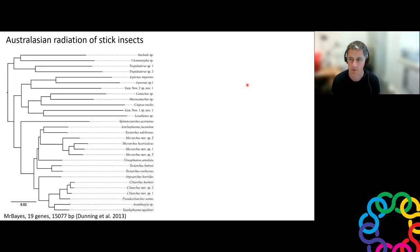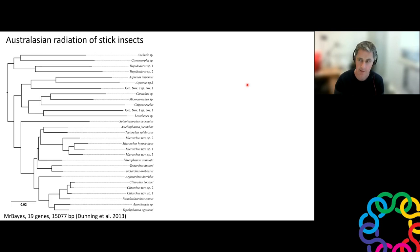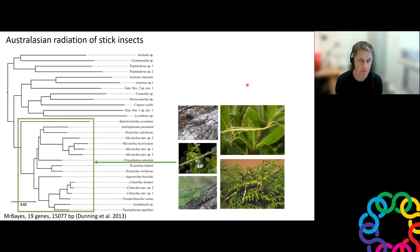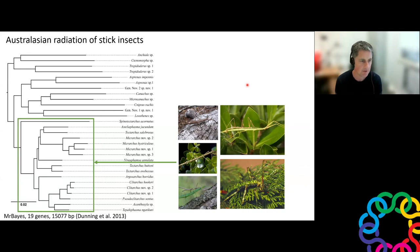For phylogenetic context, this is a phylogeny done a few years ago by a former PhD student, Luke Dunning. This is a large radiation of Australasian stick insects — a monophyletic group. There are probably a couple of hundred species in this radiation. The New Zealand ones are all in the green box: about 10 genera and 20 species, found from Stewart Island in the south right up to the Three Kings in the north, from lowland forests up into the alpine zone. Some species are really rare and only found on offshore islands; others are found over wide areas.